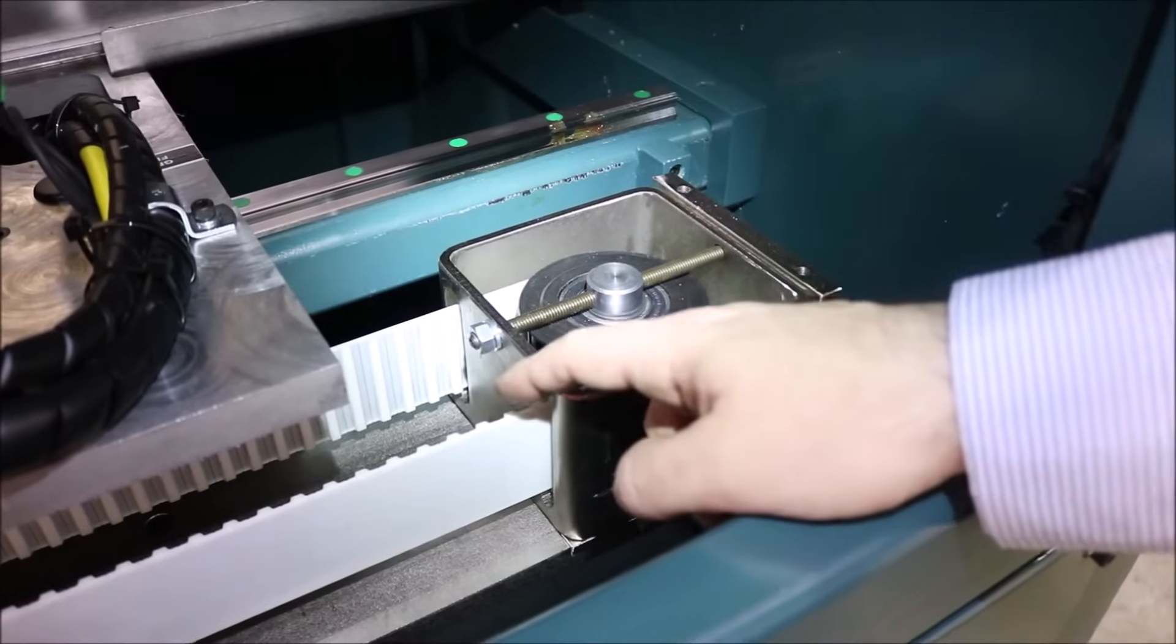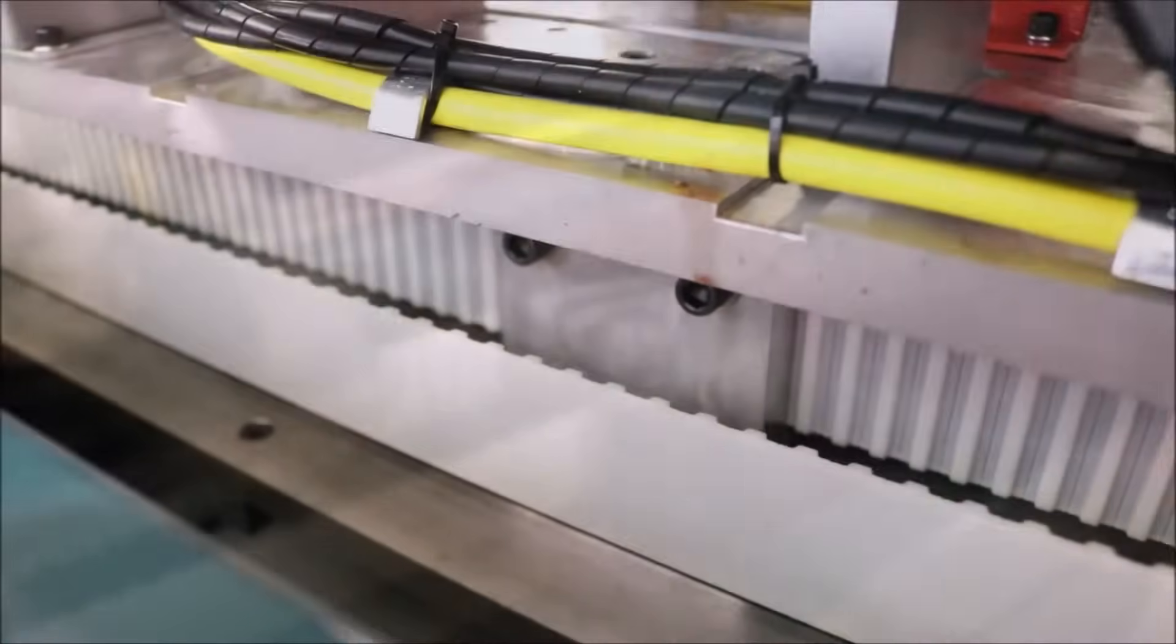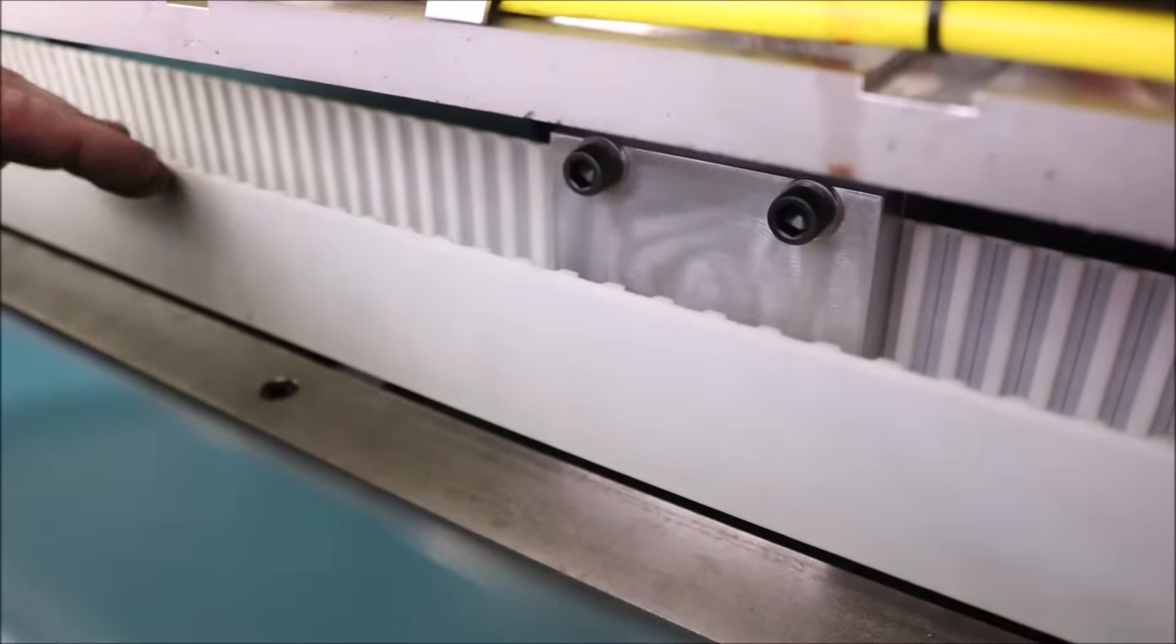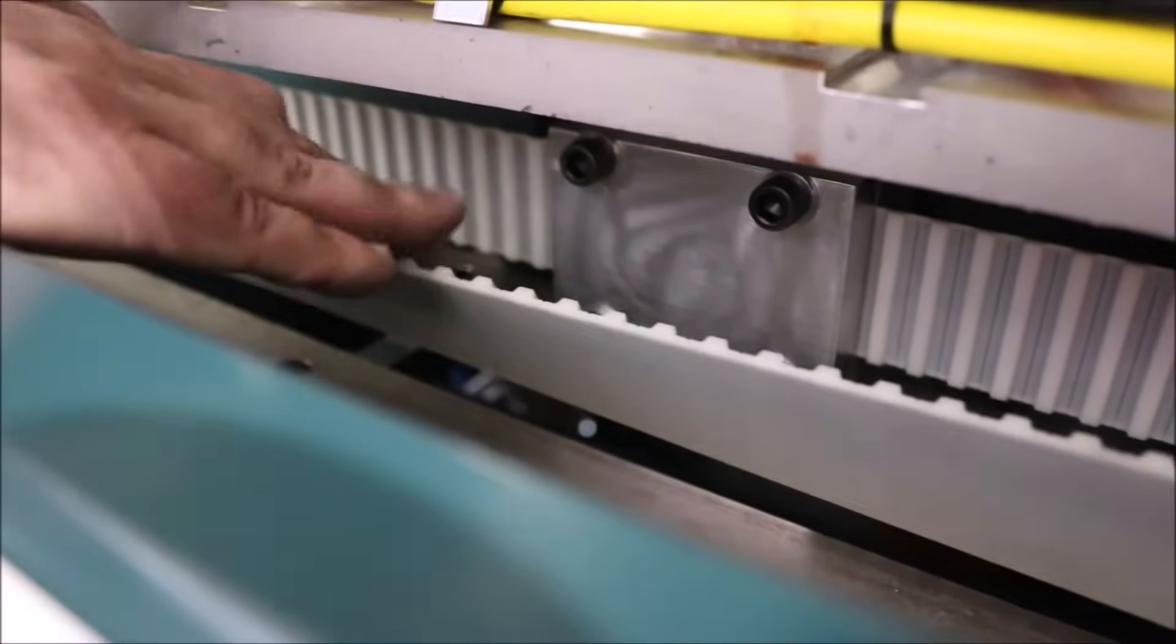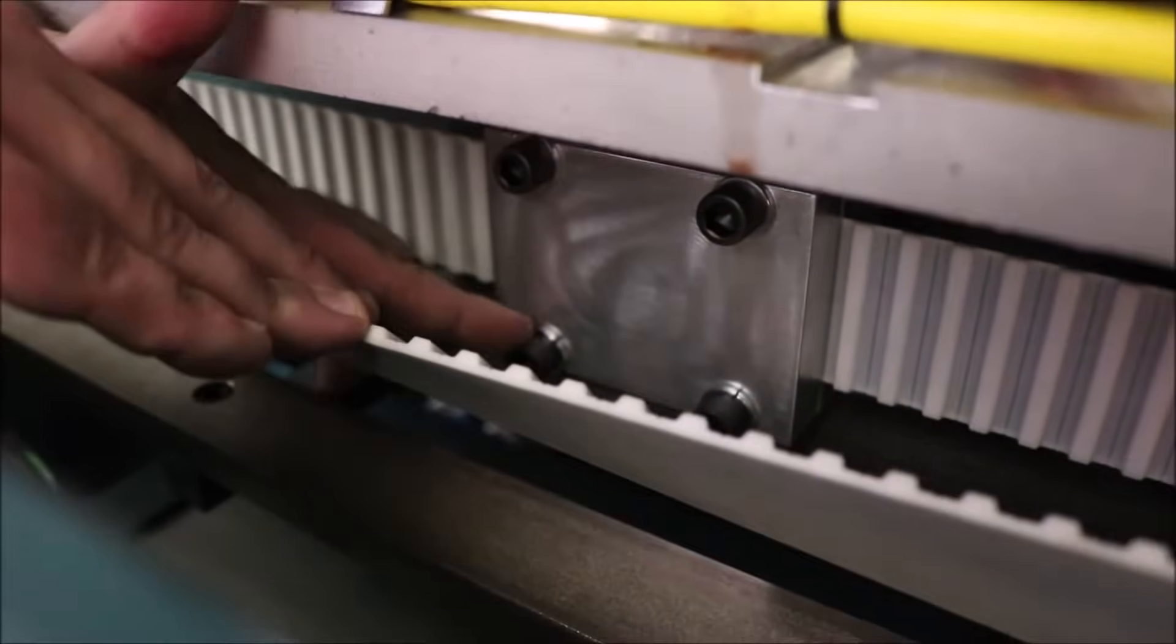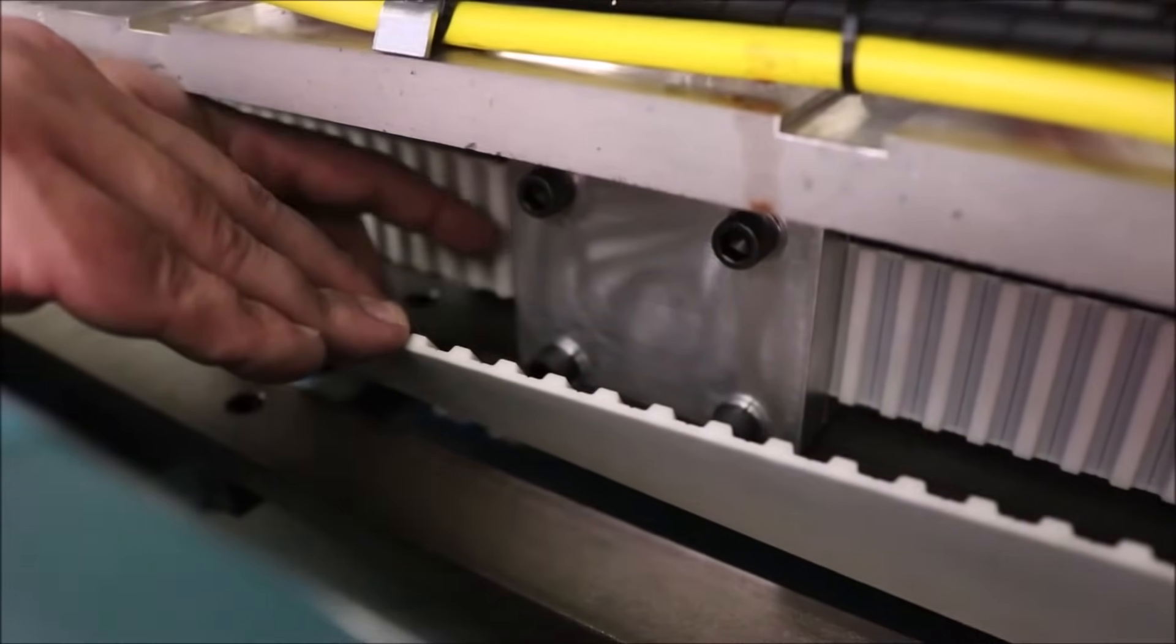Then we have four more screws that we need to remove. Once the tension of the belt has been reduced or removed, you will have access to these four screws. You will need to remove the screws and then you will be able to remove this plate.